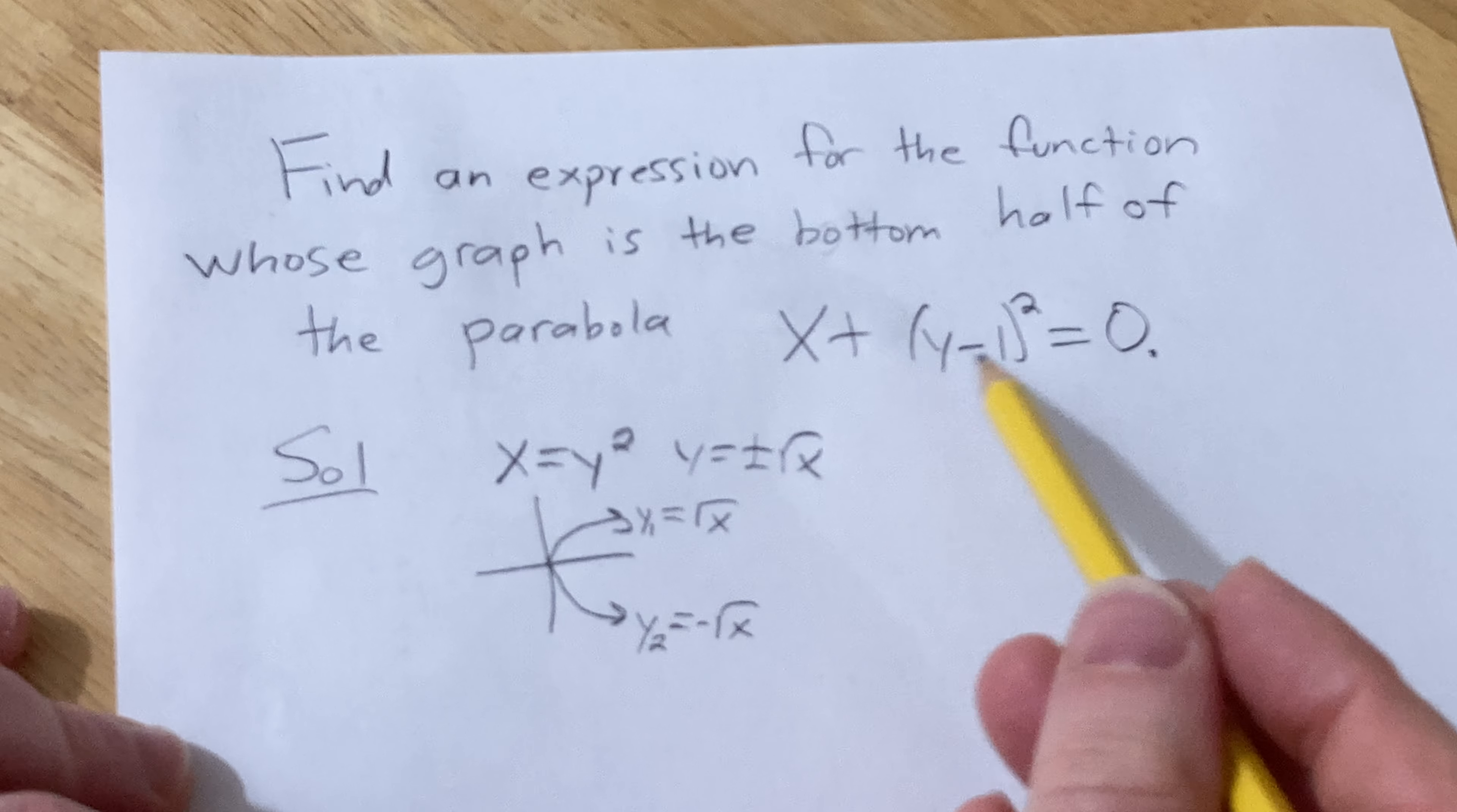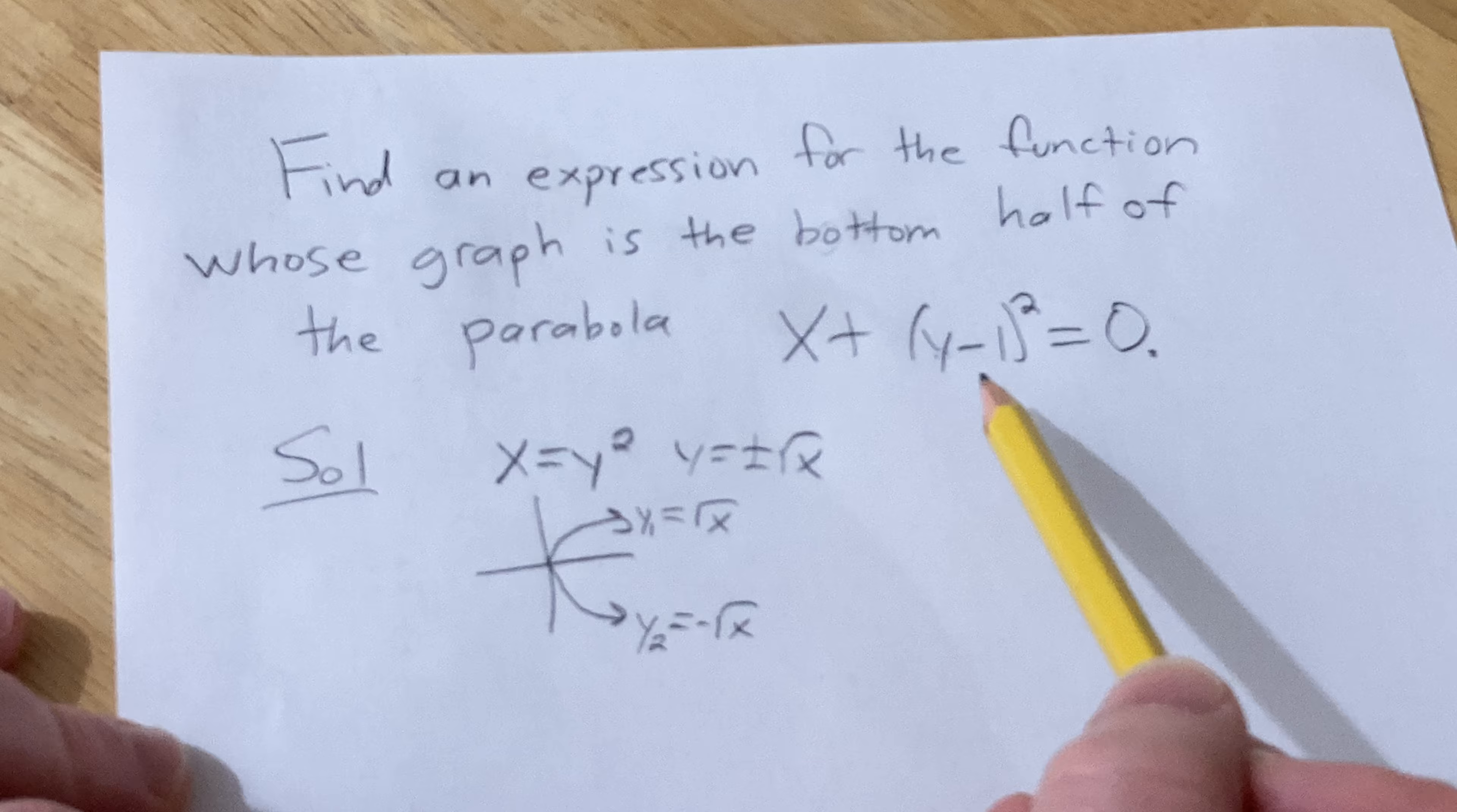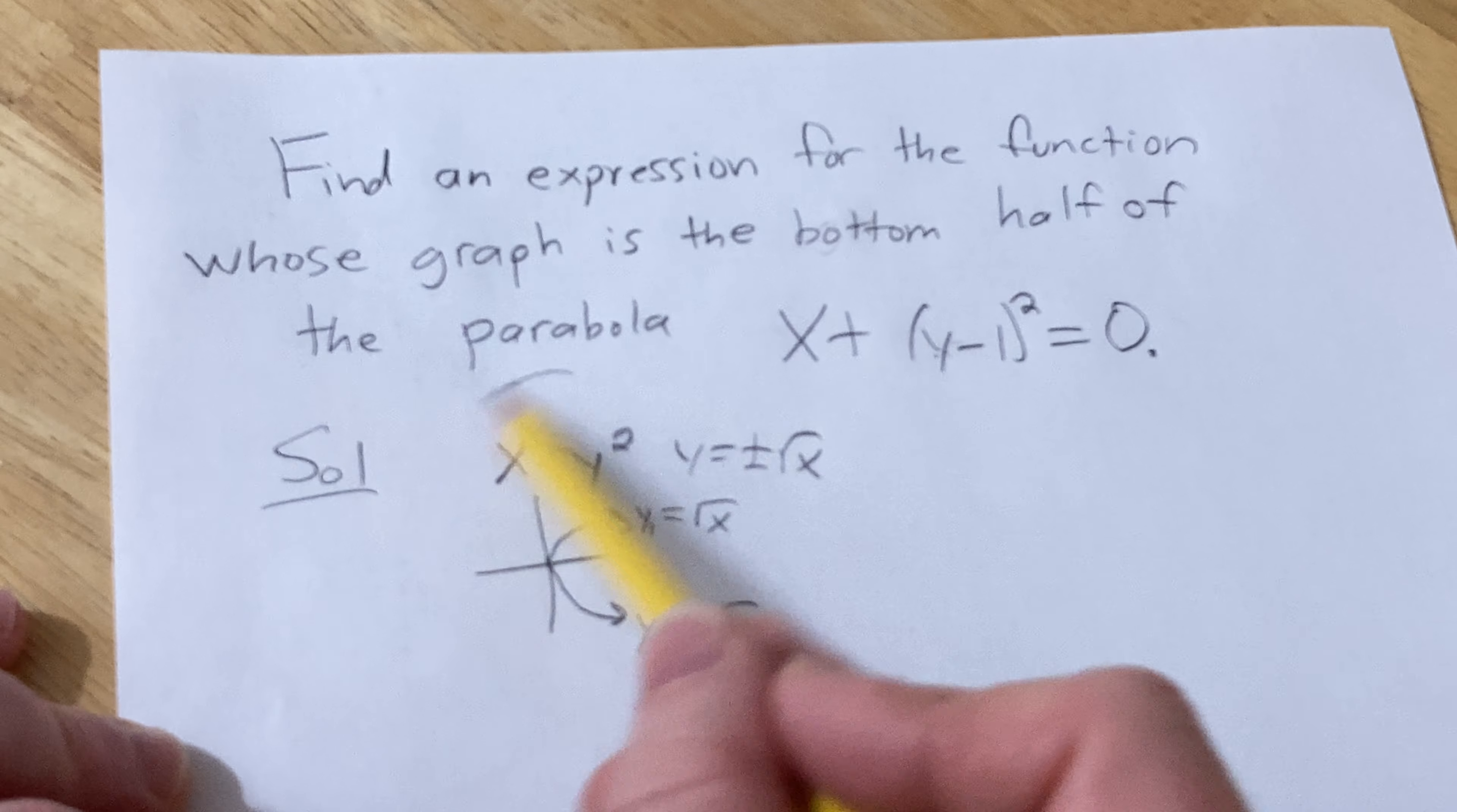So this is kind of similar, it doesn't really look like this, but it's still a parabola that opens left and right, and you know that because the y is being squared. So whenever the x is squared, it's going to open up or down, and whenever the y is squared, it's going to open left or right.